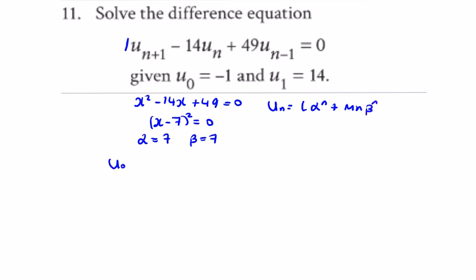So for u₀, l plus m times 0 is equal to minus 1 from above, which means l is minus 1.